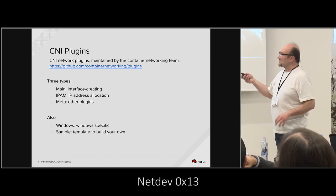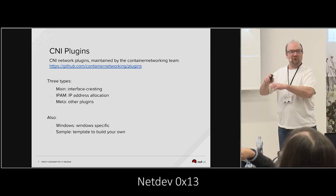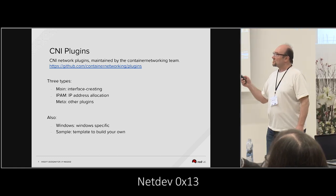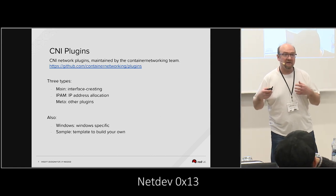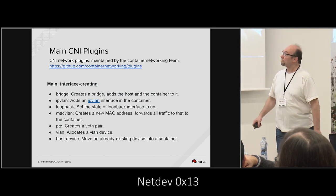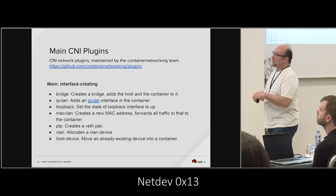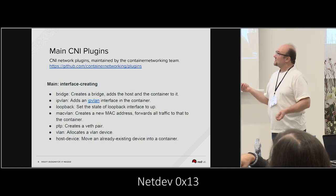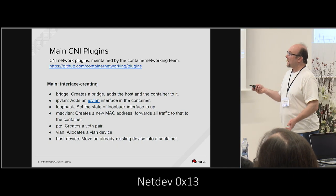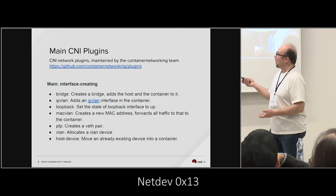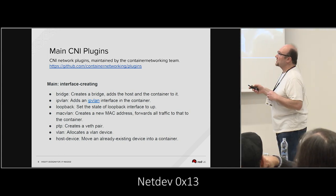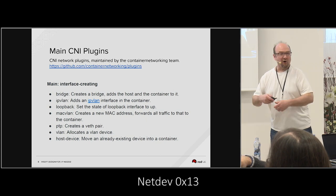One disclaimer: CNI plugins also talk about things like Windows support — I've never touched it, I just know there's something in there relating to Windows. There's also a sample plugin which is kind of like a template for you to build your own plugins of any type: main, IPAM, or meta. The main plugin types should look familiar to anyone familiar with IP Route 2: bridge, Linux bridge — typical Docker zero. There's also IP VLAN, loopback, MAC VLAN, point-to-point, VLAN, and host device, which lets you literally put a real NIC inside your container.